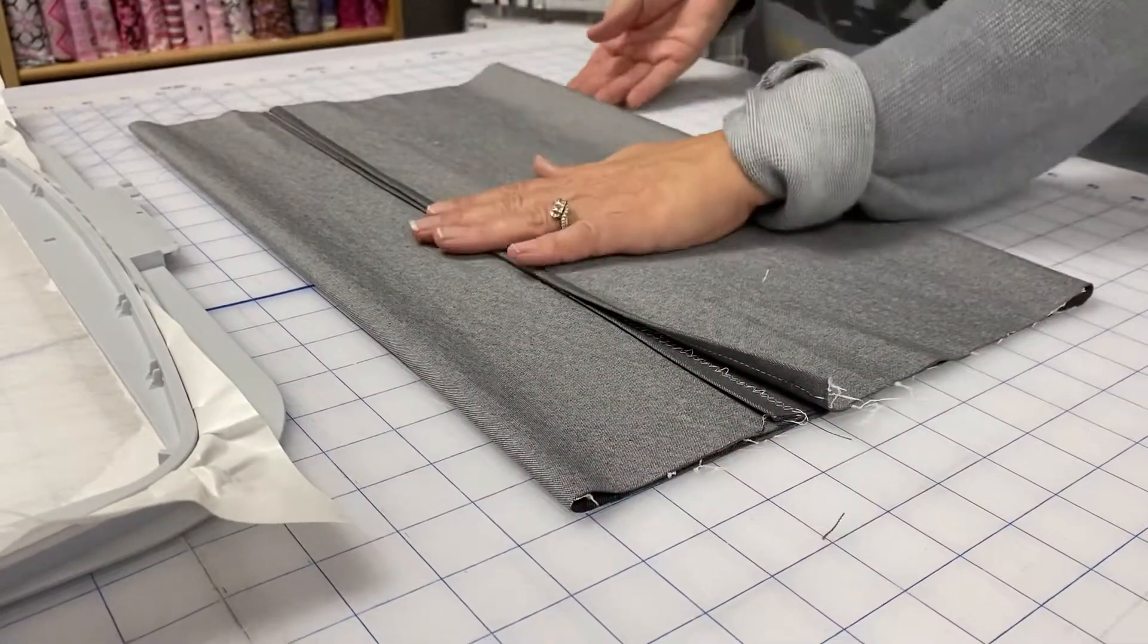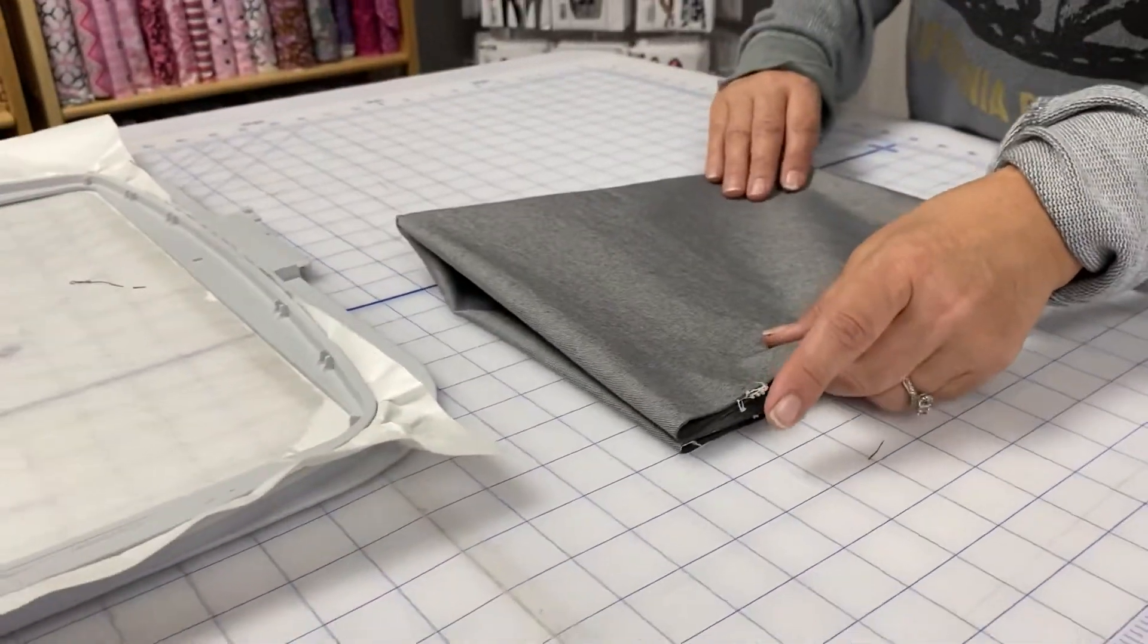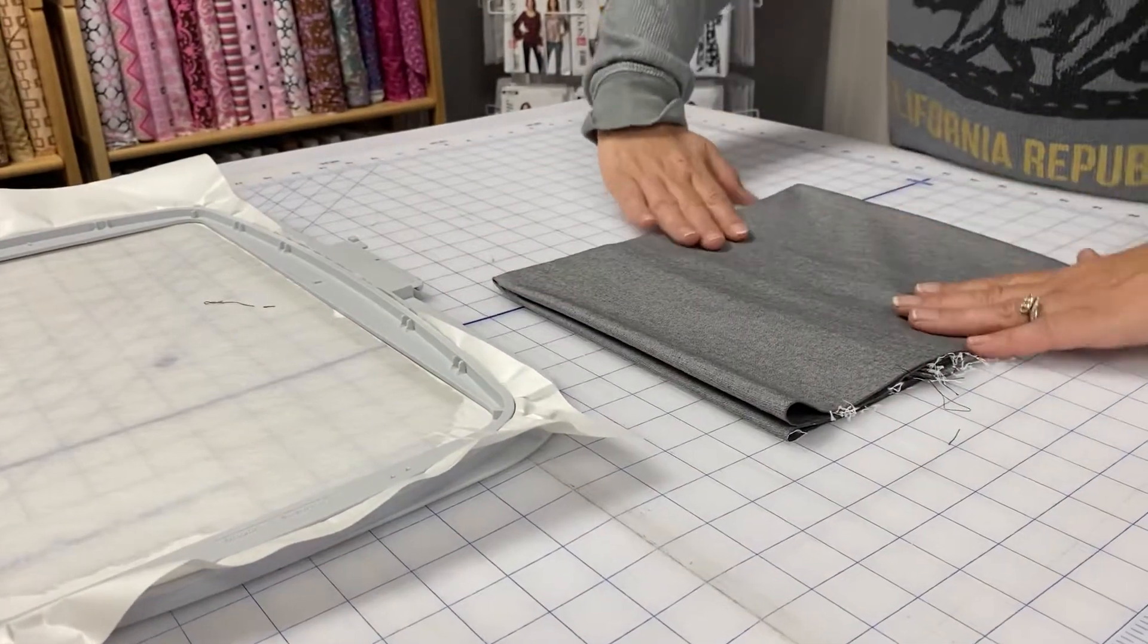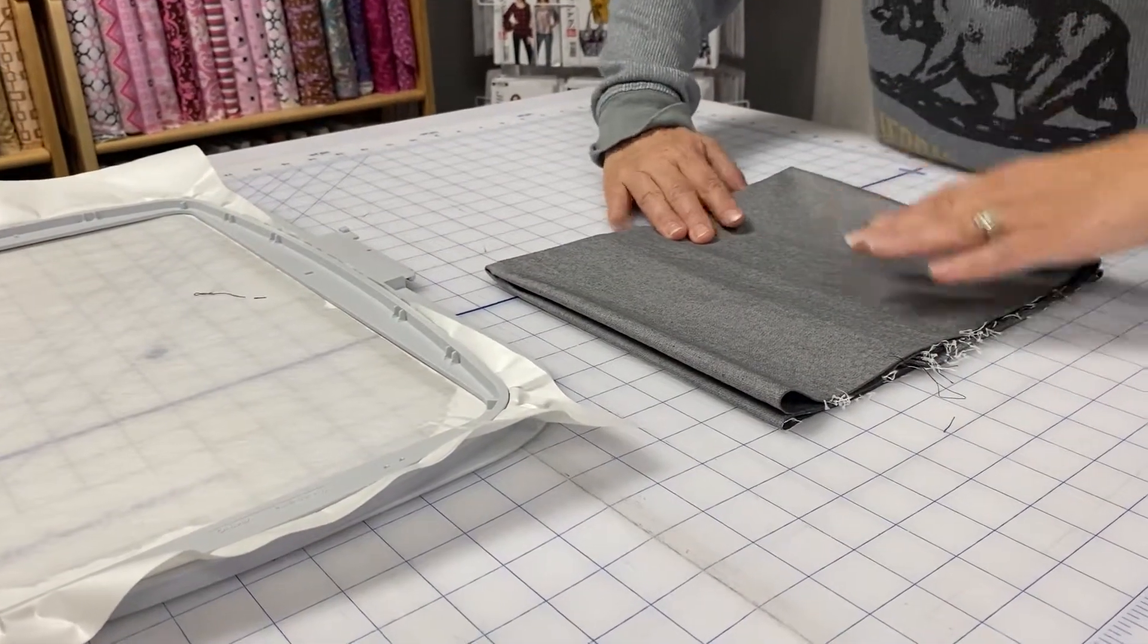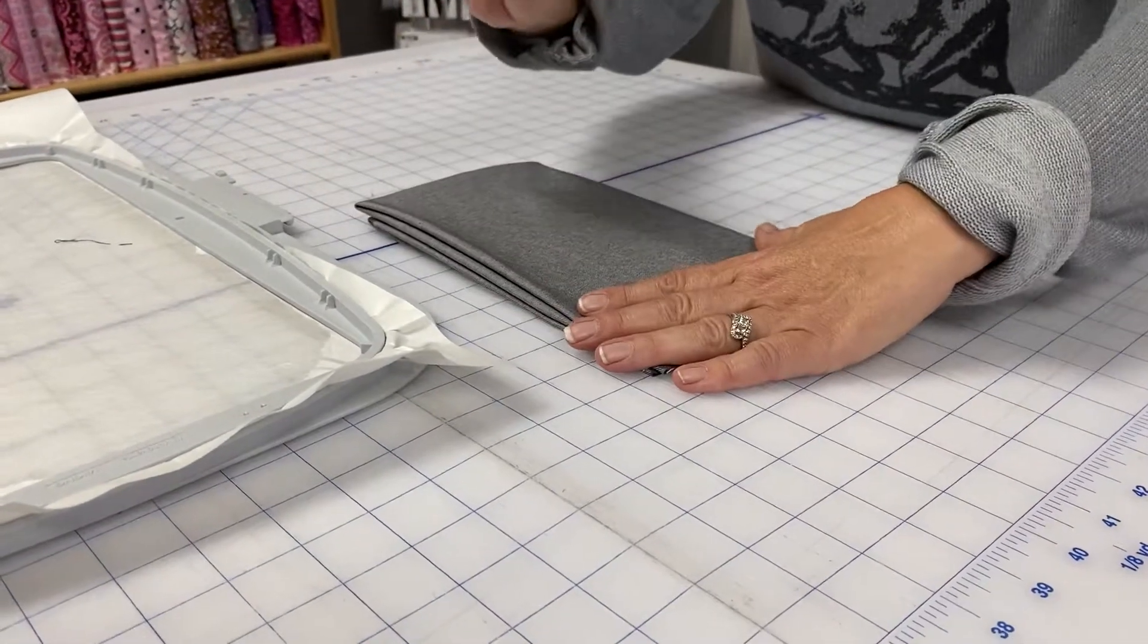Now I'm going to take and fold it left to right. This is fold two. Now I'm going to fold it bottom to top and that is fold three. Tri-fold.